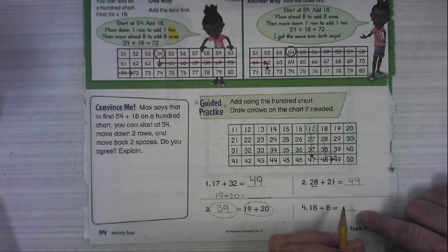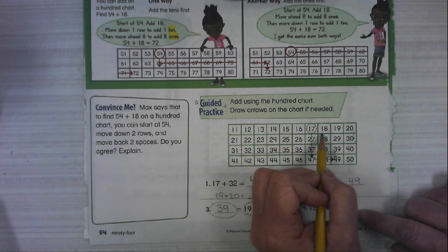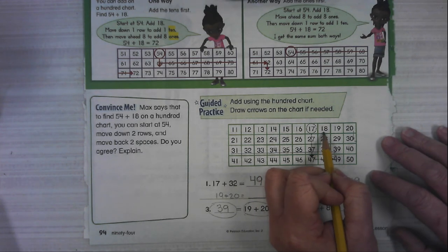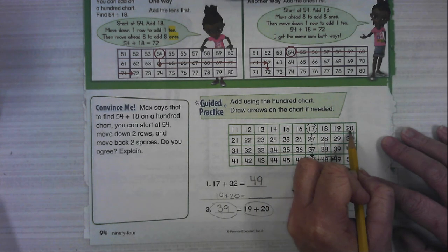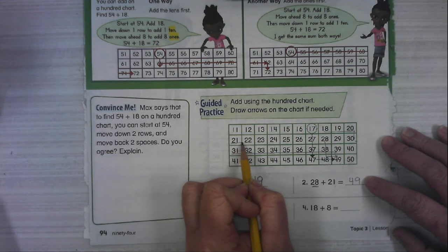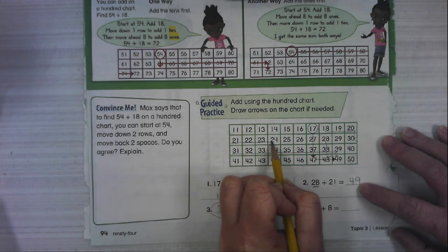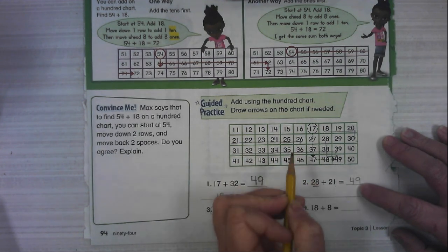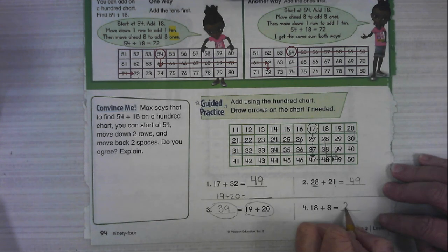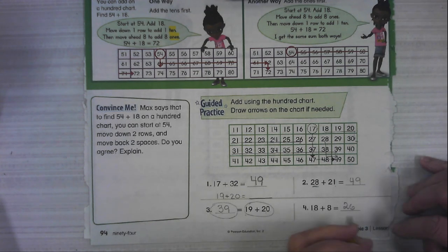And then 18 plus 8. Starting at 18, we're going up 8 ones. 1, 2, 3, 4, 5, 6, 7, 8. And we ended up at 26. Alright, not too bad. We can do this.